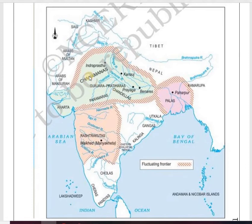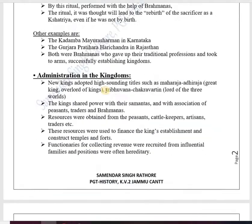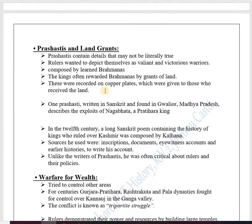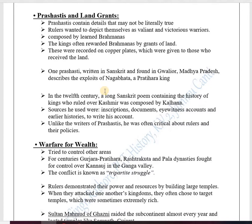Looking at the map, the Gurjara-Pratihara dynasty is shown, and Gwalior is located in that region. This Prashasti glorifies Nagabhata of the Gurjara-Pratihara dynasty. In the 12th century, a long Sanskrit poem containing the history of the kings who ruled over Kashmir was composed by Kalhana.